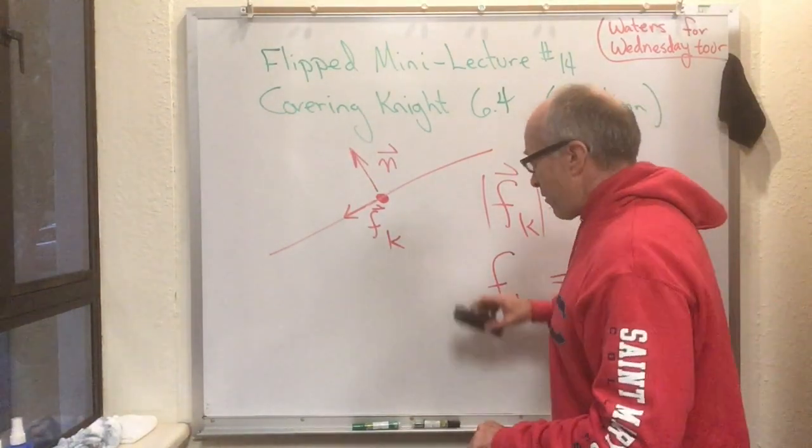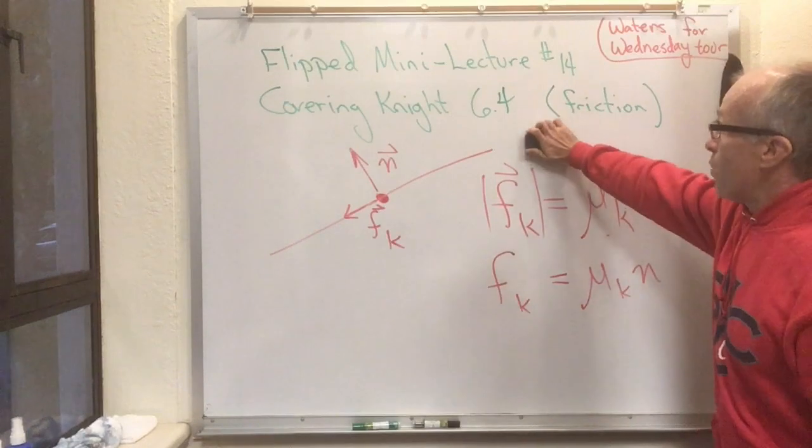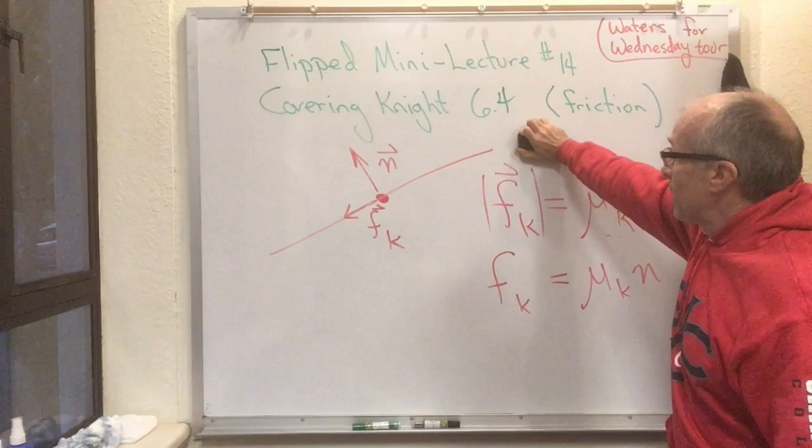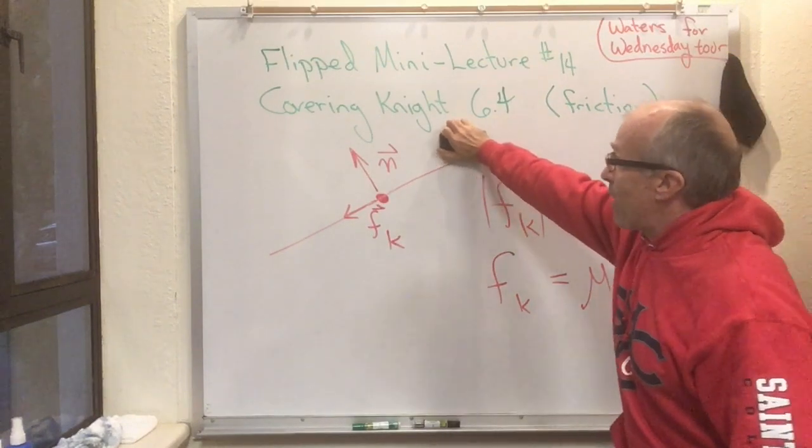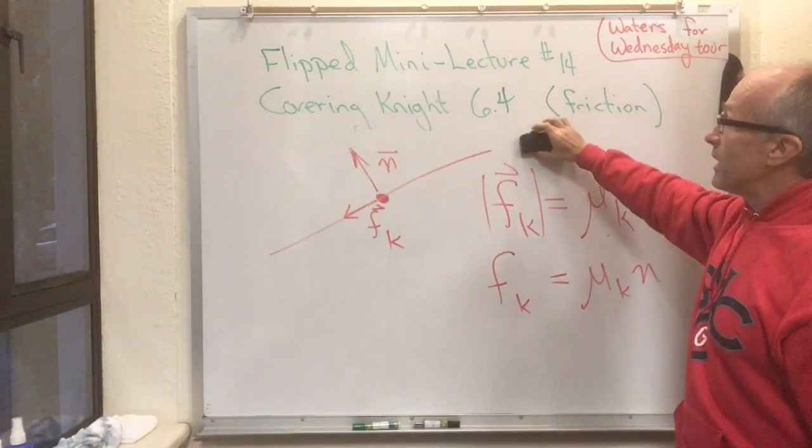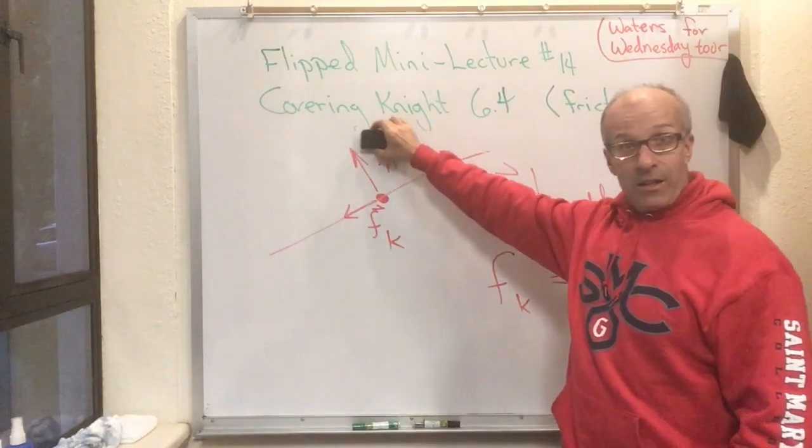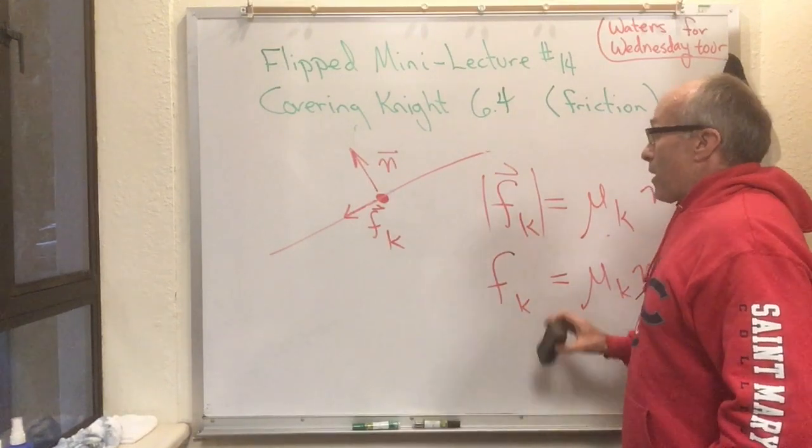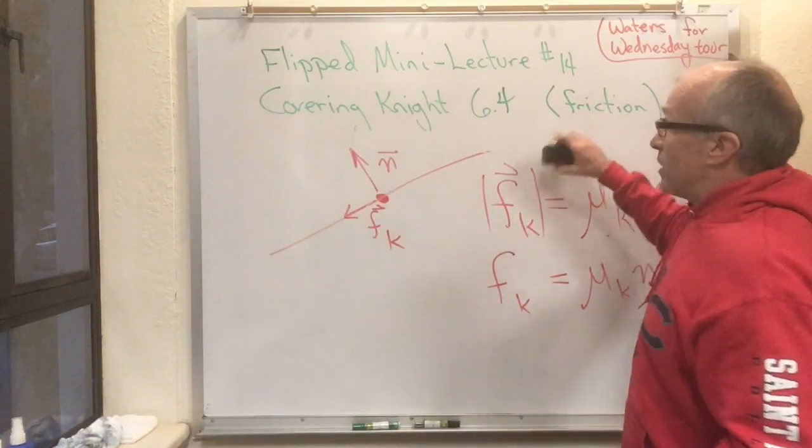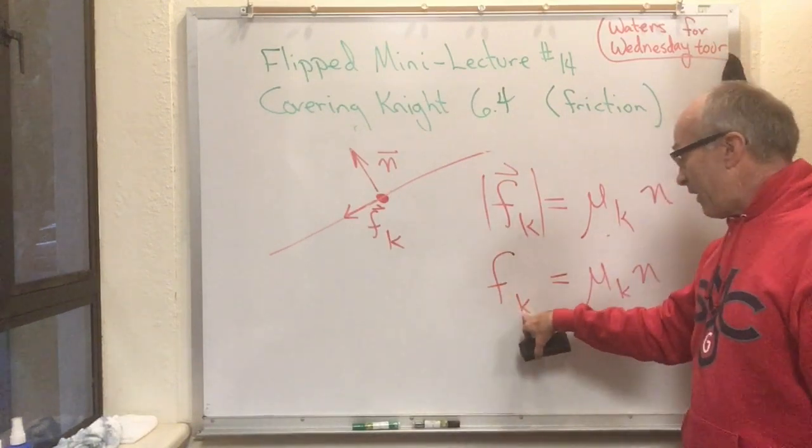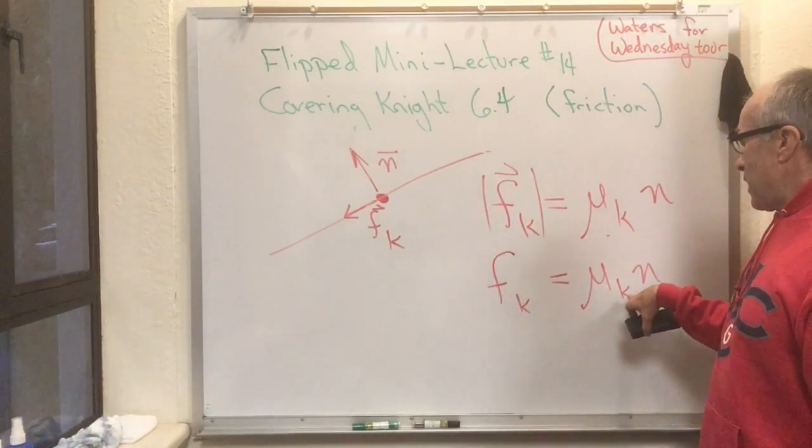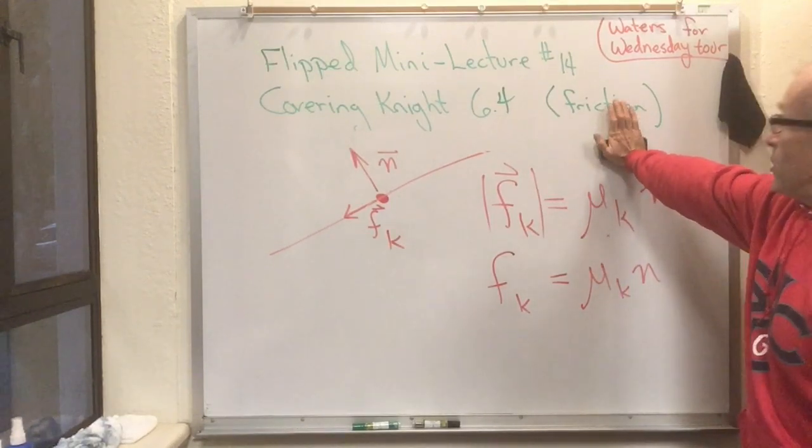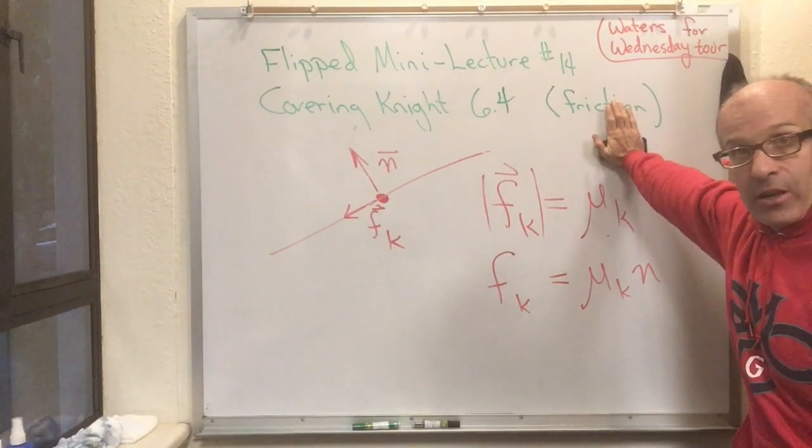In other words, when we're pushing down hard on something, here I'm going to push this eraser against the board, I'm leaning against it. When we're pushing hard on something, it slides rather difficultly. And if I'm pushing lightly on something, it slides rather easily. So the amount of frictional force that is able to be generated in resistance to the direction of motion, f kinetic, is proportional to how much the thing is being jammed against whatever is generating the friction.